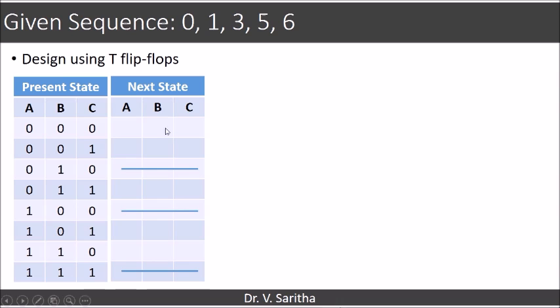And so for present state 0 we will get next state as 1. For present state 1 we will get next state as 3. For present state 3 next state is 5. For present state 5 next state is 6. And next state for 6 is 0.